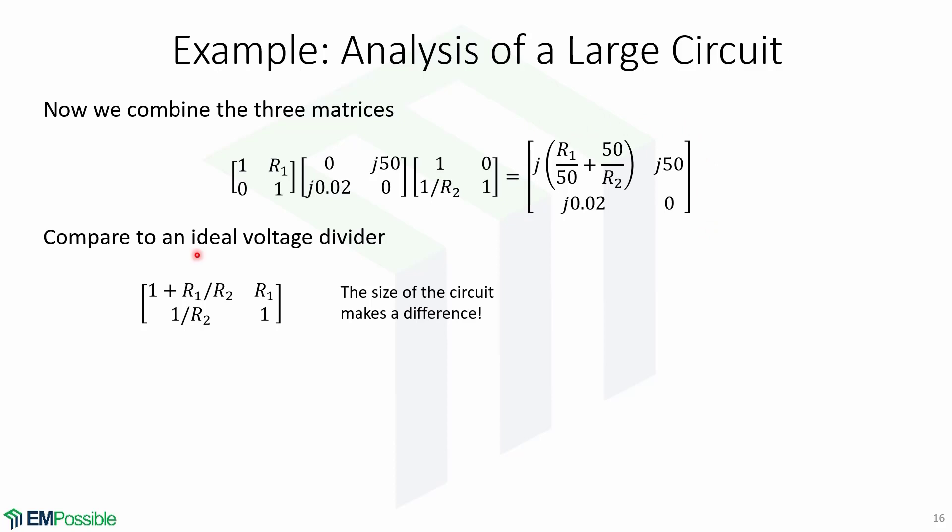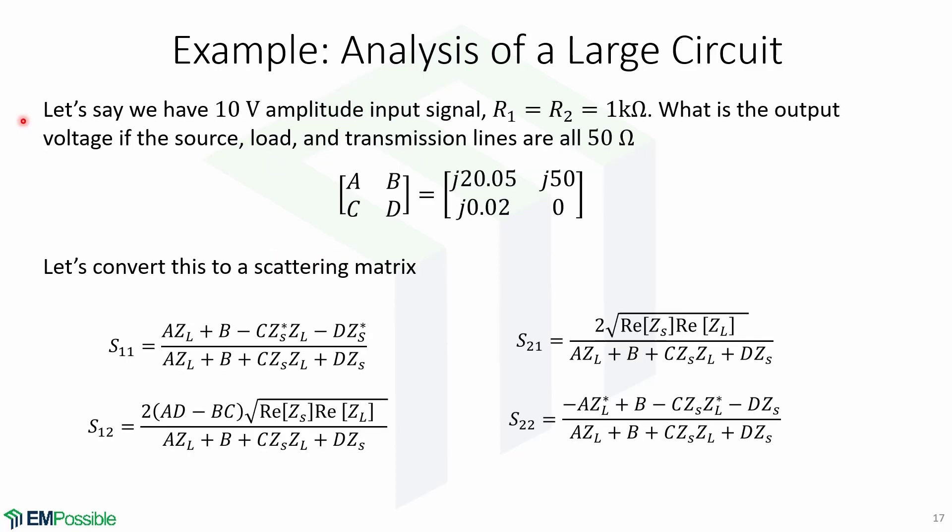Now take notice and compare to an ideal voltage divider, which is given by this matrix. As you can see, the size of the circuit can make a huge difference for simple networks such as a voltage divider. To truly grasp how much it affects the voltage divider ideal behavior, assume we have a 10 volt amplitude input signal and R1 equals R2 equals 1 kilo ohms.